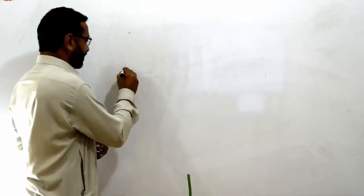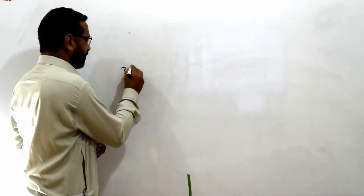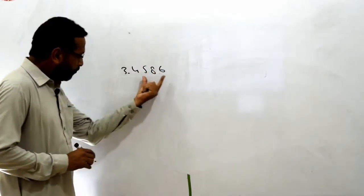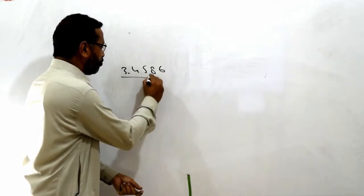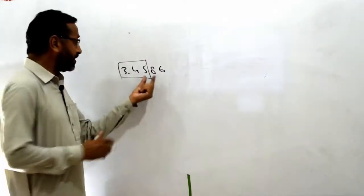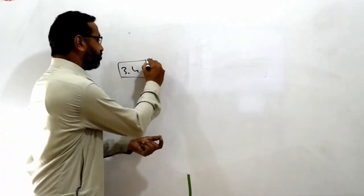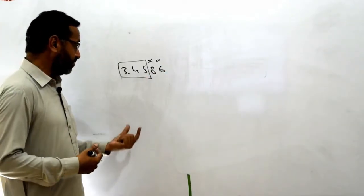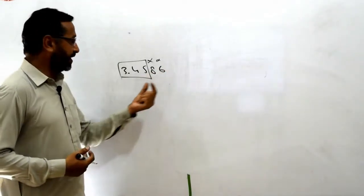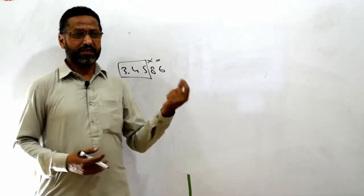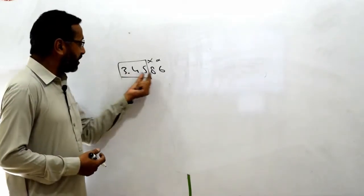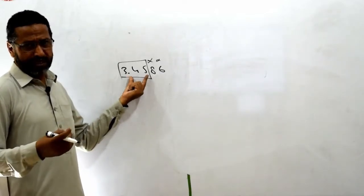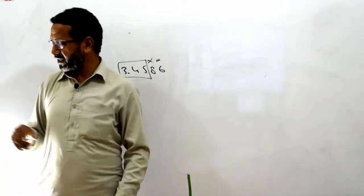Let's suppose آپ کے پاس ایک number ہے 3.4586. آپ کہہ رہے ہیں کہ point کے بعد جو 4 digits آ رہے ہیں، ہمیں صرف 2 چاہیے. تو اس کو ہم اپنی طرف سے 8 اور 6 کو ہٹا نہیں سکتے، بلکہ کچھ rules کے مطابق remove کریں گے. تو وہ جو طریقہ کار ہے جس میں ہم undesired digits کو ہٹا کر number کو reduce کریں، اس کو ہم rounding off data کہتے ہیں.